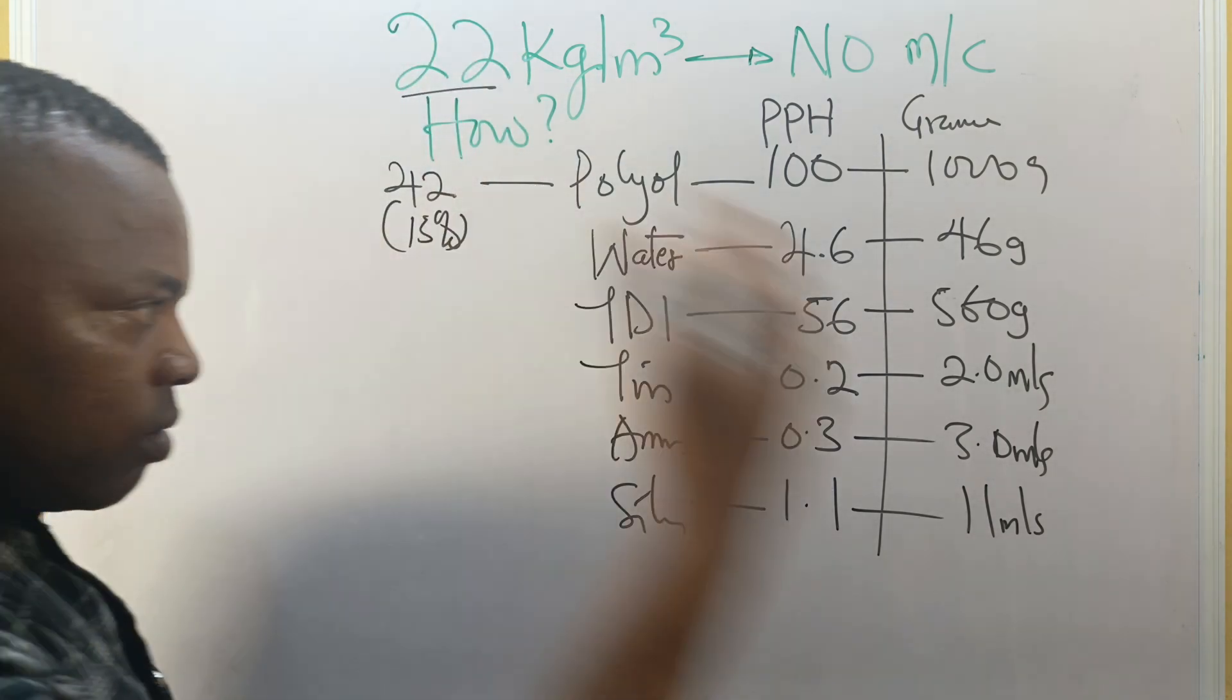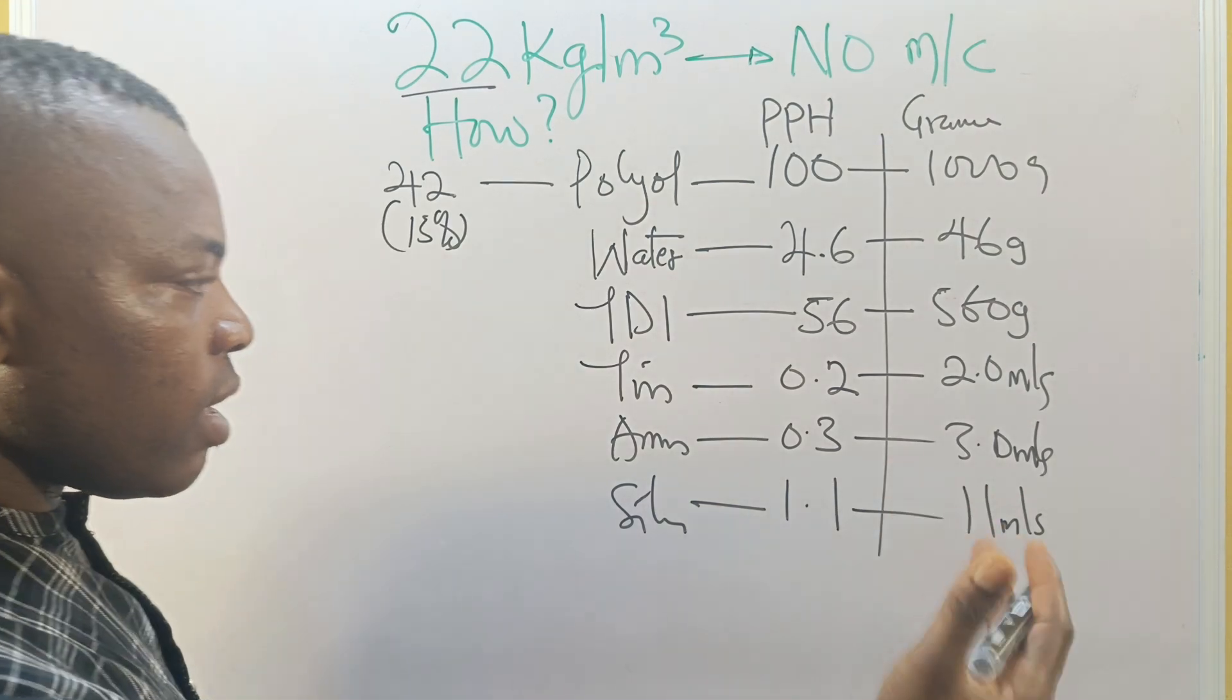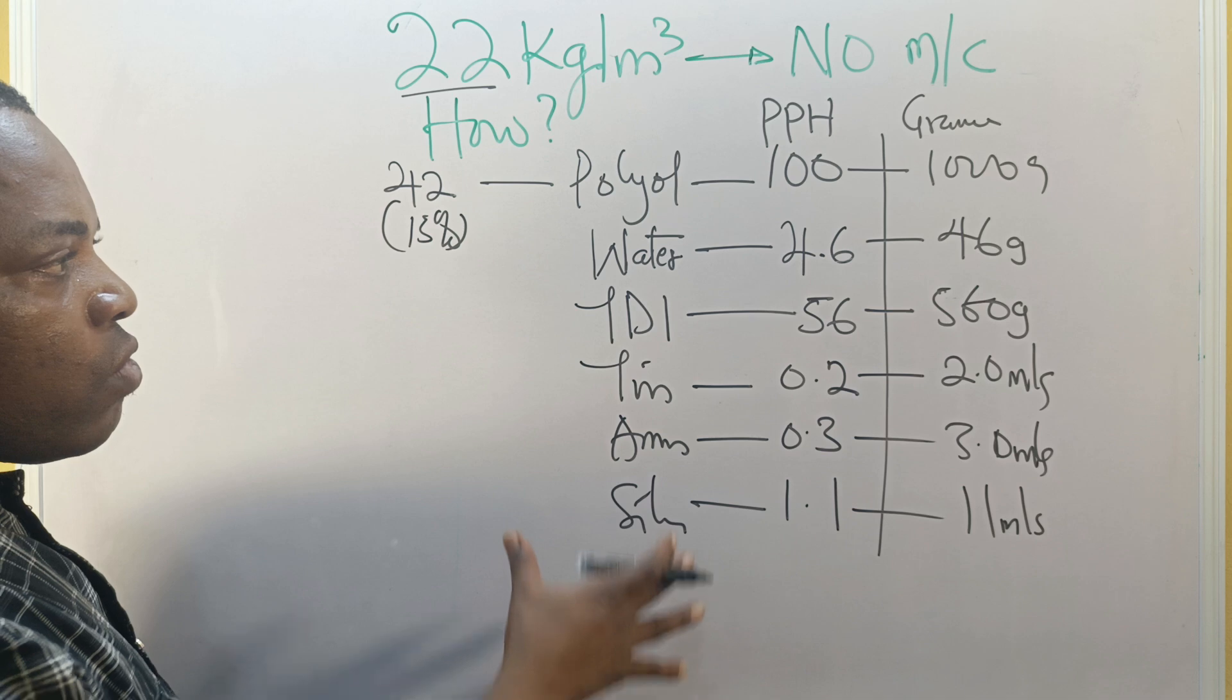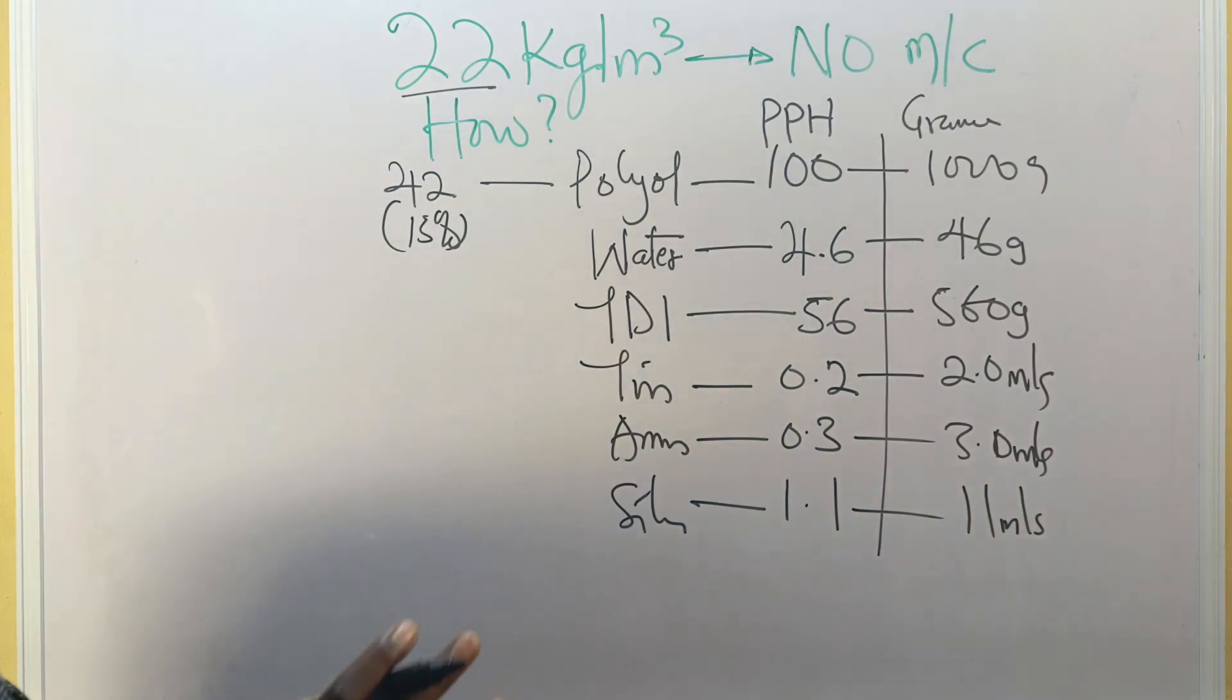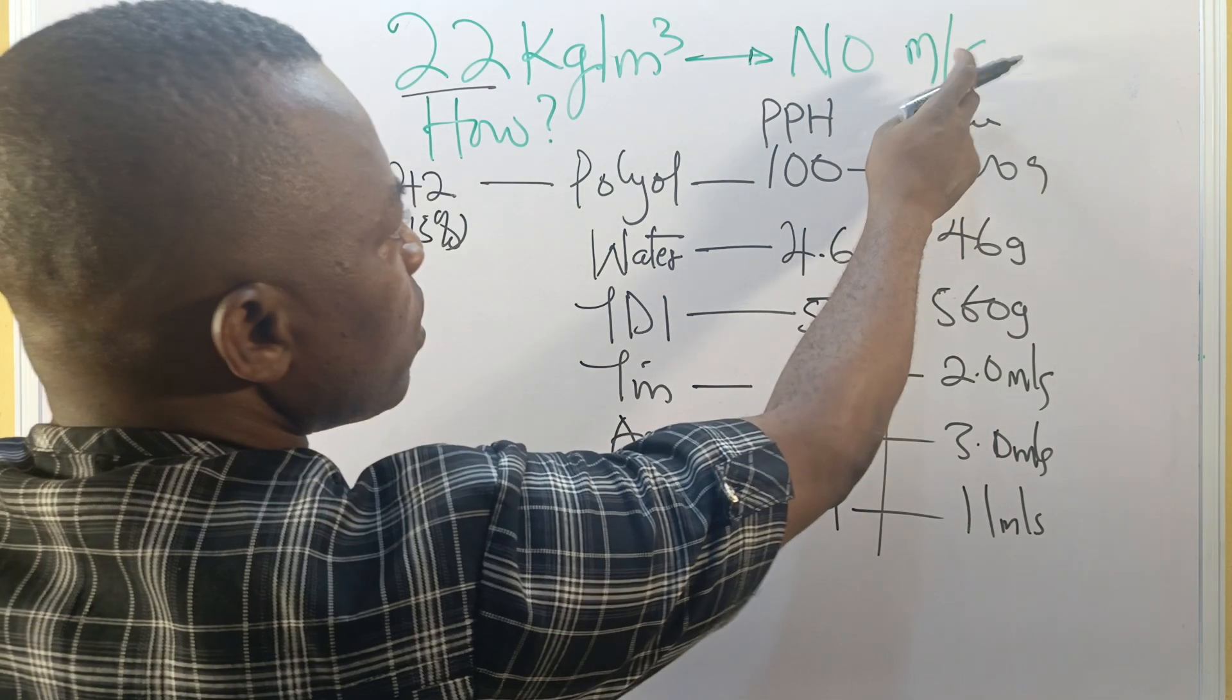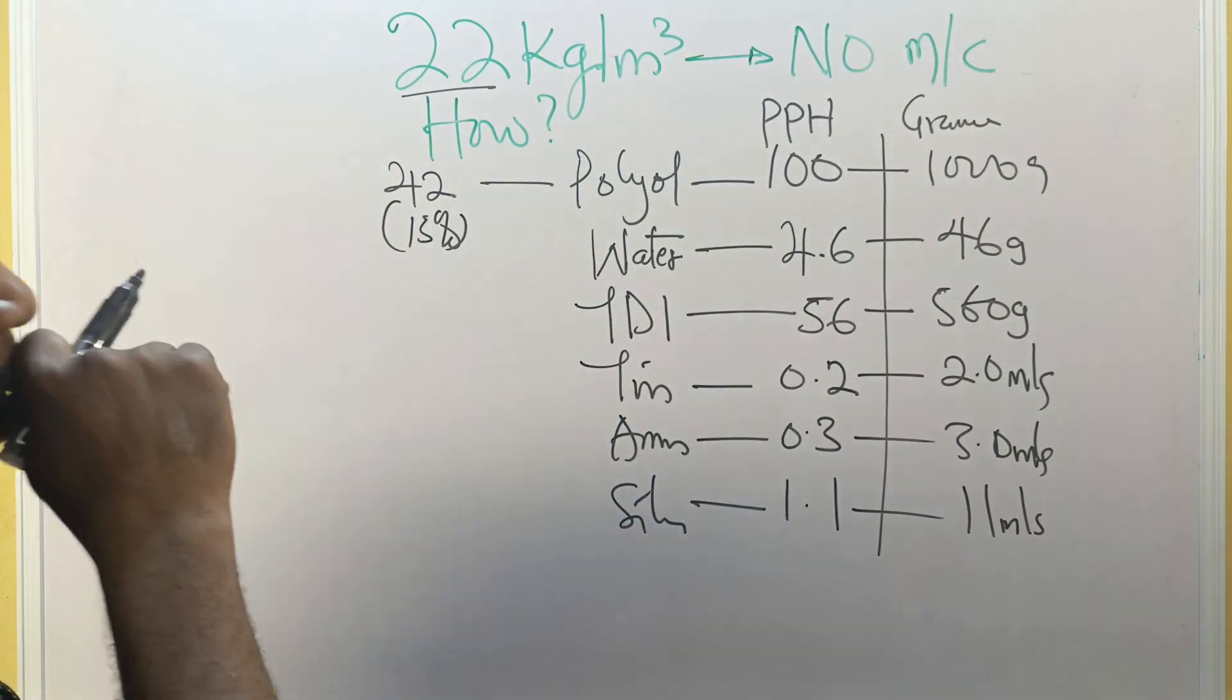You need to test it at the laboratory scale to check whether it will give you a density of 22. If yes, take it to the last scale. If no, make some adjustment.